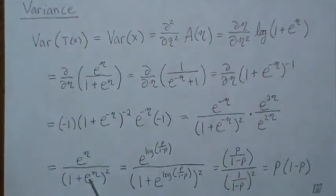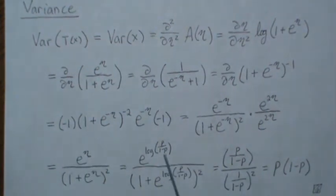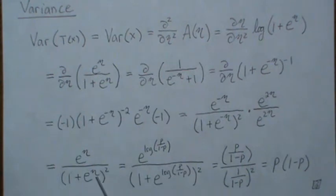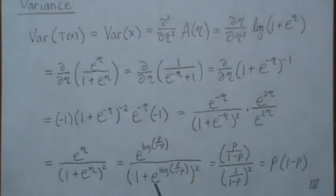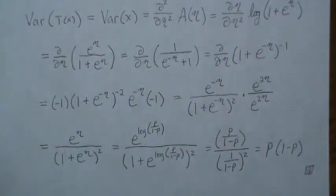Now when we plug in our eta, which is log of p over 1 minus p, that cancels. And then here, then we get this and that squared. Invert and multiply, it's p times 1 minus p. And that's what we know to be the variance of a Bernoulli.